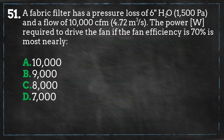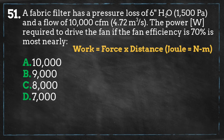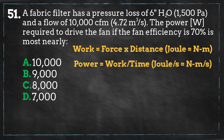In this problem, we are looking to calculate the power needed to drive this fan that is operating at 70% efficiency. We know that work is force times distance, having the units of joules or one Newton of force causing a displacement of one meter. Power is work per unit time with units of joules per second, which equals watts.